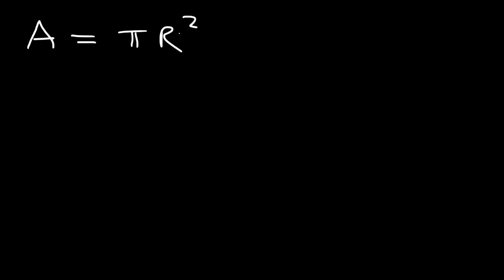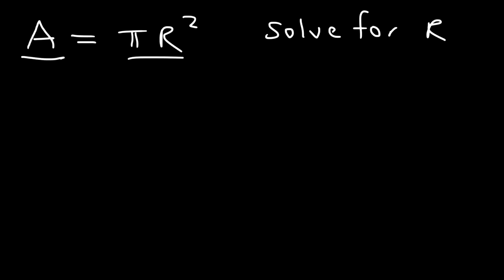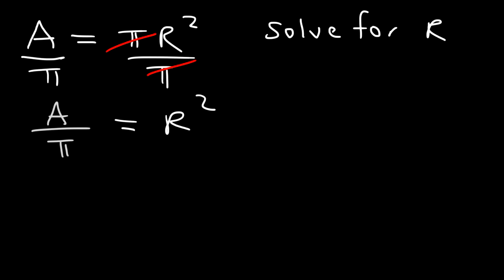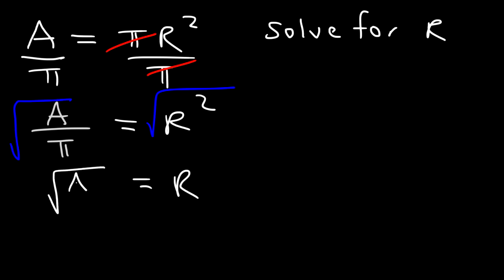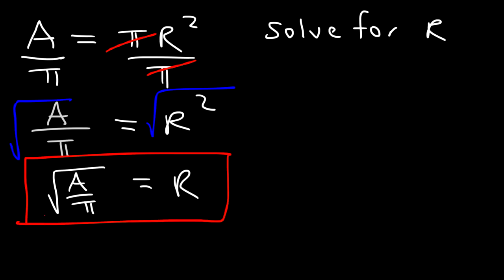The area of a circle is equal to pi r squared. In this example, let's solve for r, the radius of the circle. To get r by itself, we need to divide both sides by pi. So A divided by pi equals r squared. To get rid of the square, take the square root of both sides. The square root of r squared is r, and that's equal to the square root of A divided by pi. That's how you isolate the variable r.